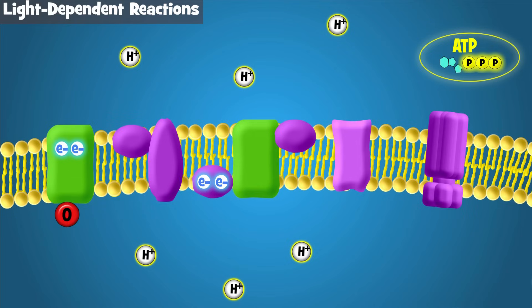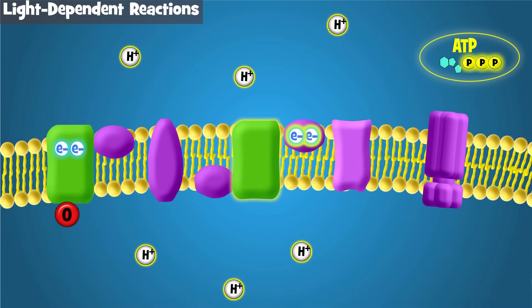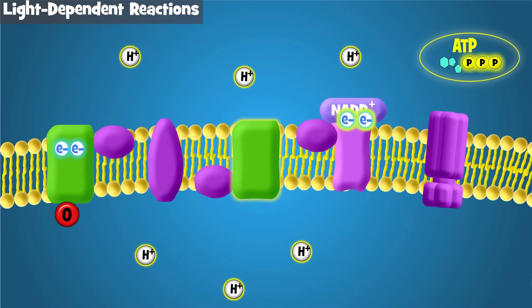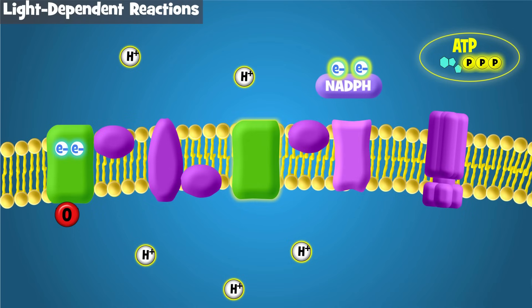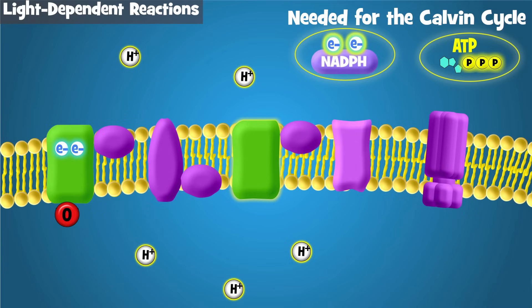When the electrons reach the end of this first electron transport chain, they go to photosystem 1, where light excites them once again. They travel down a second, shorter electron transport chain, where they are accepted by a molecule called NADP+. When it accepts the electrons, it also accepts hydrogen and becomes NADPH. NADPH is an electron carrier, and is another key product of the light-dependent reactions. It carries electrons and hydrogens to the next set of reactions in photosynthesis, the Calvin cycle.